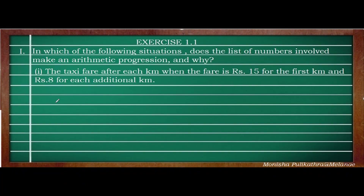In Exercise 1.1, we need to find out whether the given sequence is in AP or not. The first question is: the taxi fare after each kilometer, when the fare is Rs.15 for the first kilometer and Rs.8 for each additional kilometer.